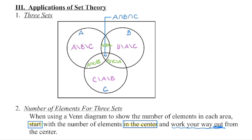Likewise, this section here is elements belonging to B and C — they're part of both B and C, but not including A. This region here indicates elements belonging to A and B but not set C. And this region refers to elements that are in A only — so they're A but not B and not C.